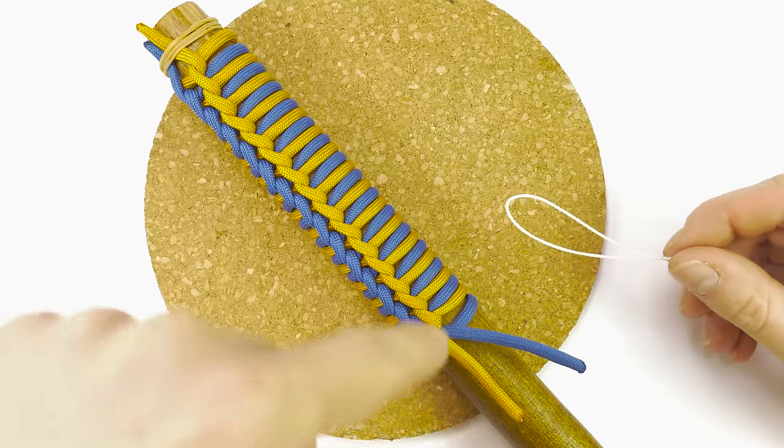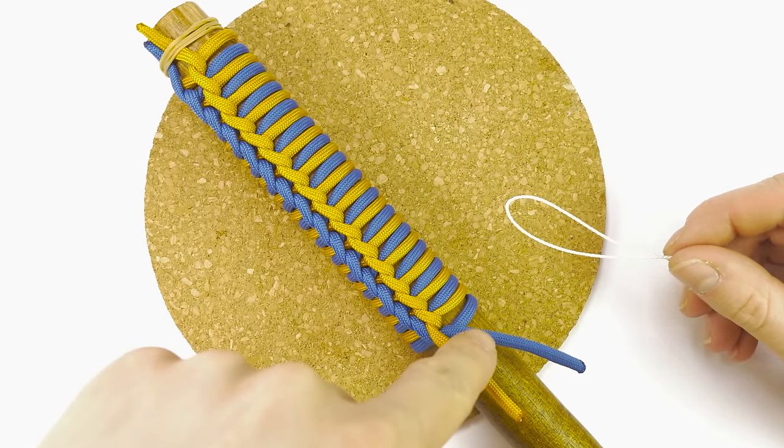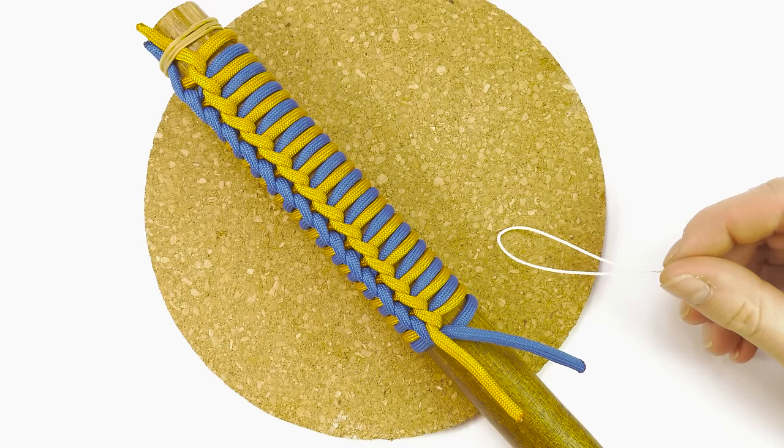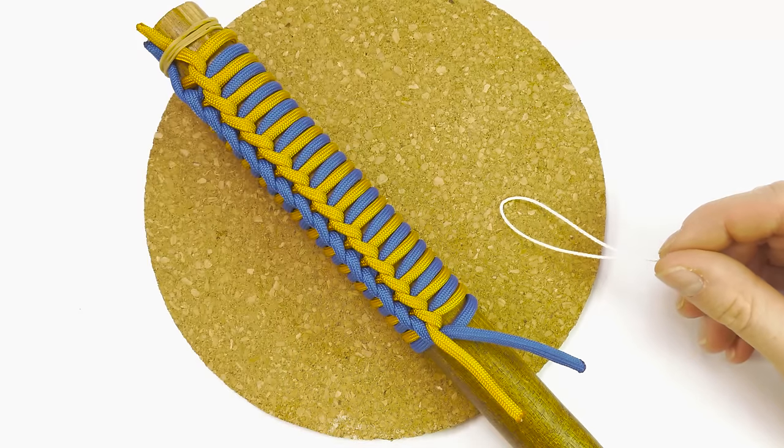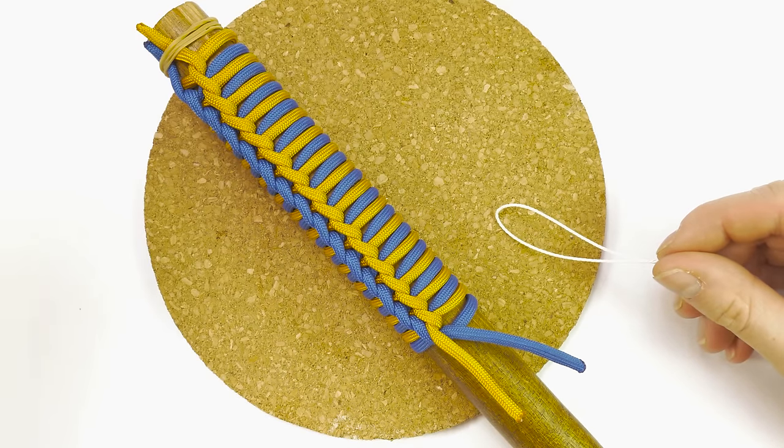It is best to use artificial sinew for binding the ends, but if you don't have it available you can either use rope or even an inner strand of paracord, since those are quite strong as well.